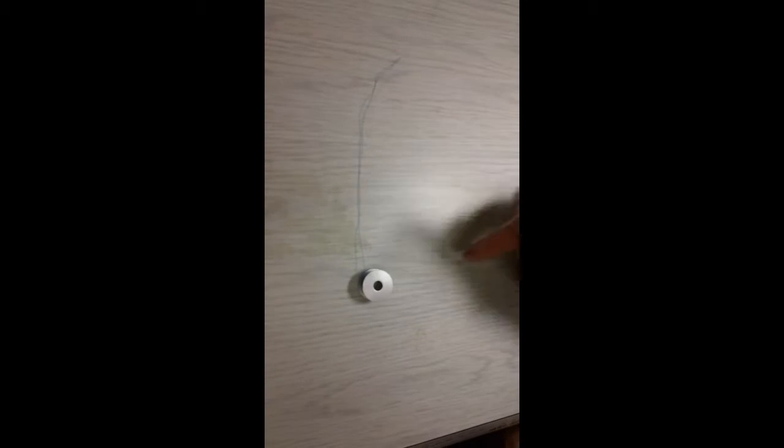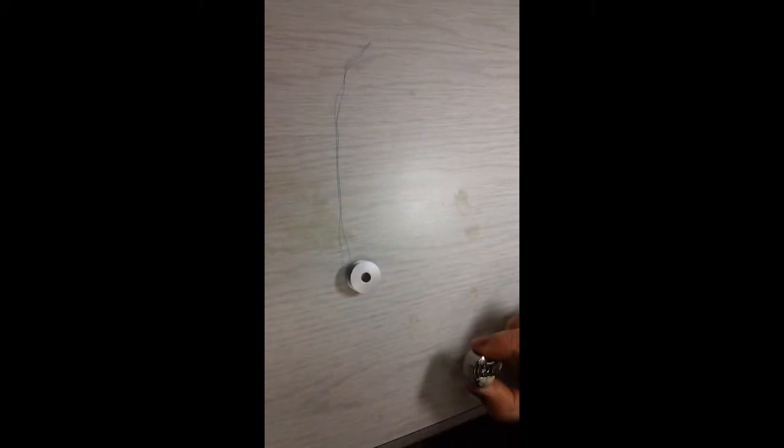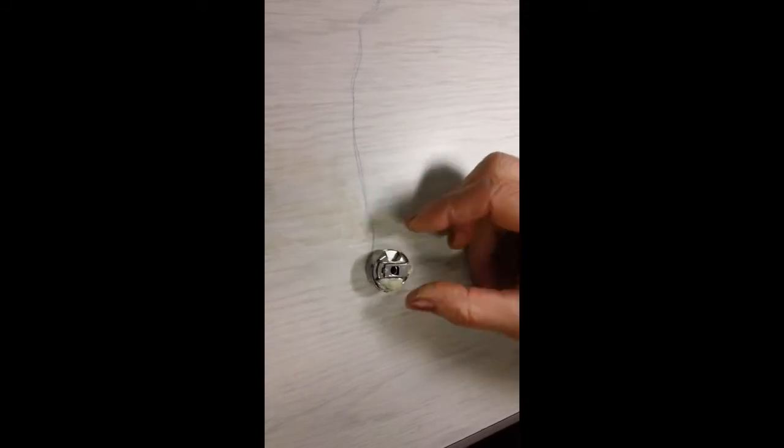To insert your bobbin, make sure it is making the shape of a B so that the thread is coming from underneath. Slip the bobbin case over the top. Take the thread through that slot and then back through the other one and pull.